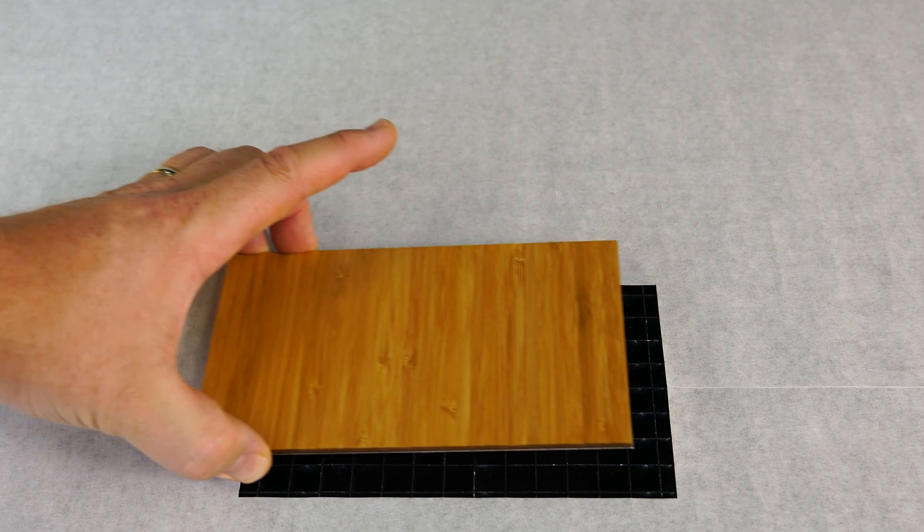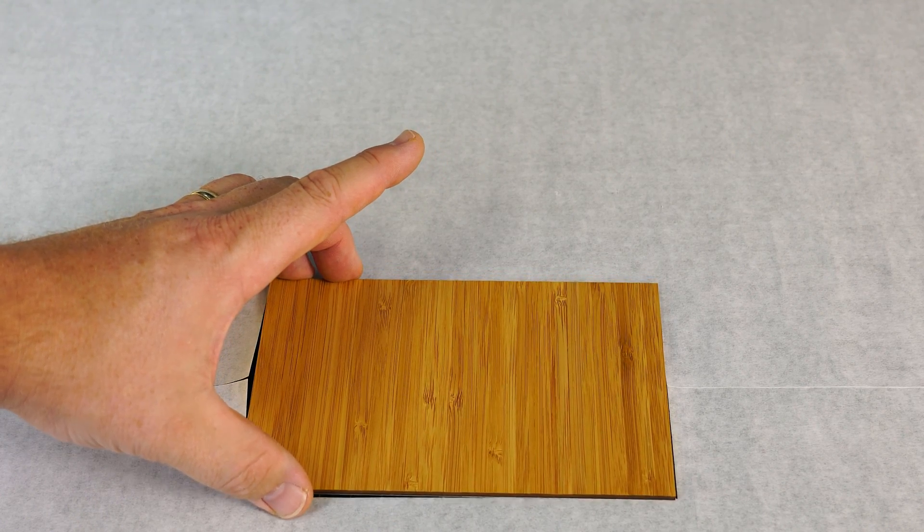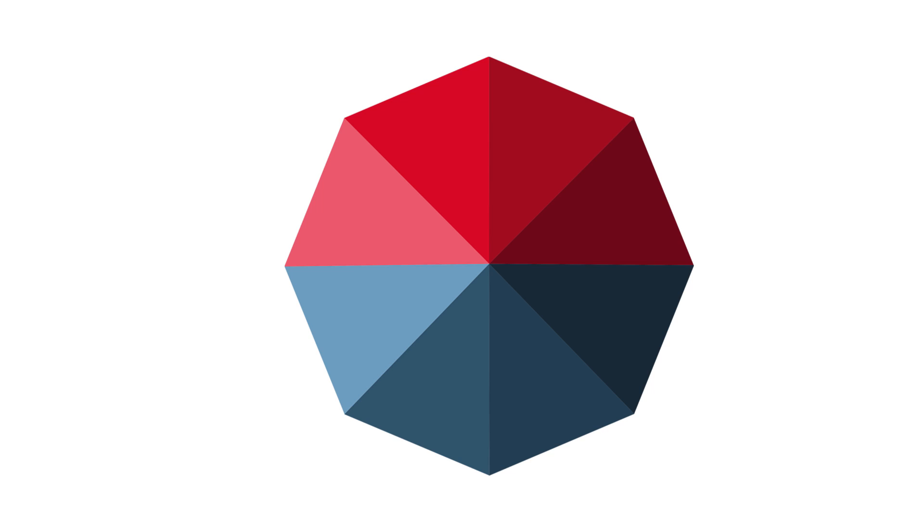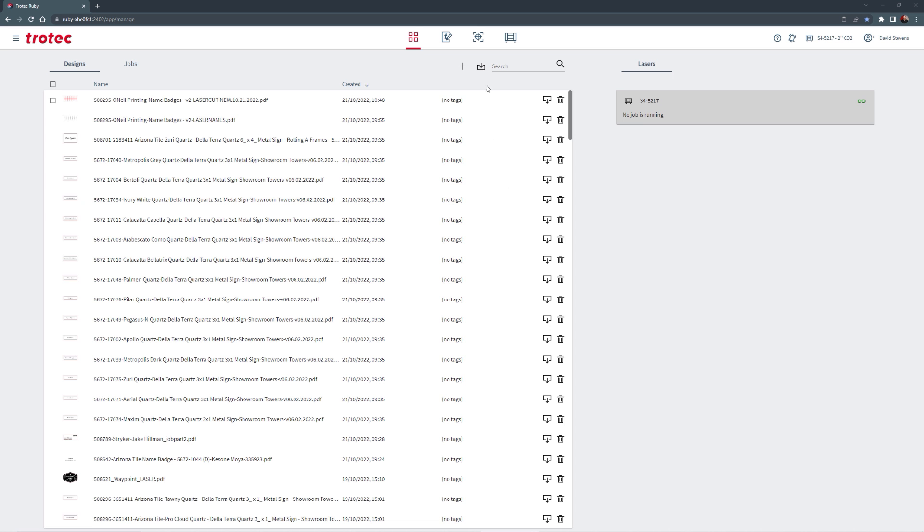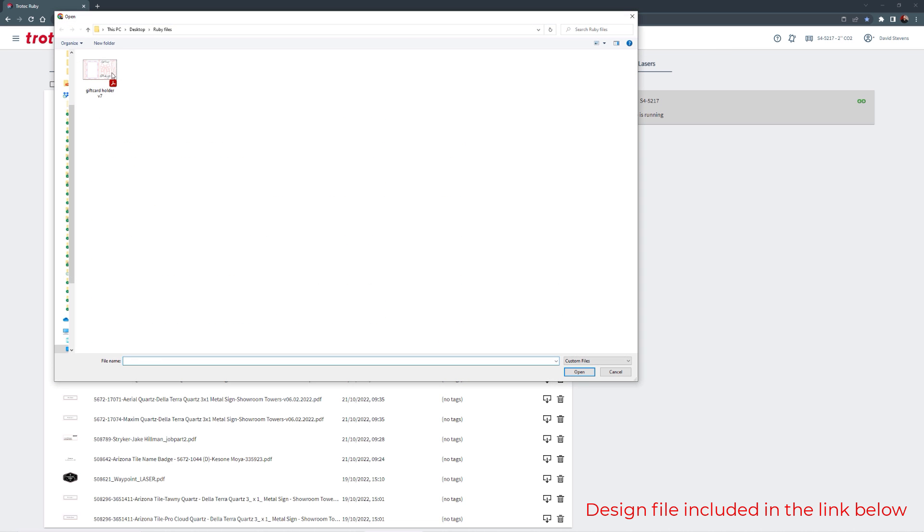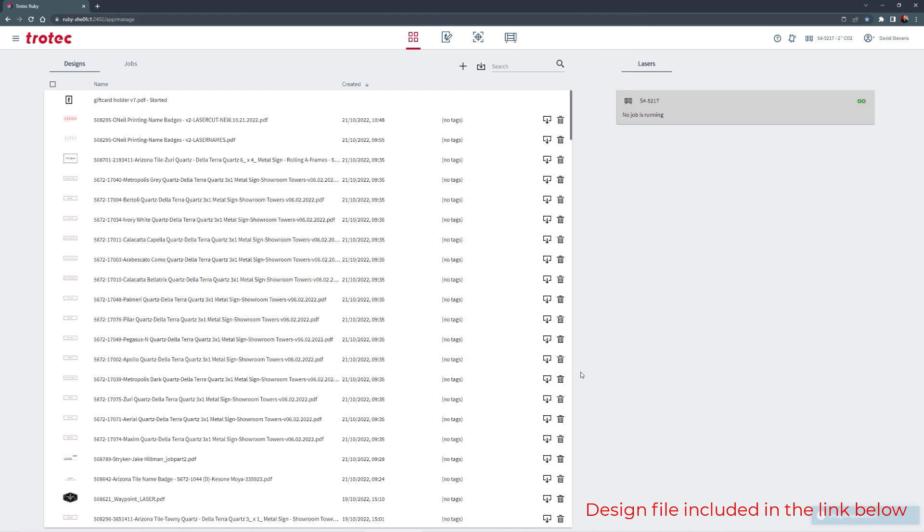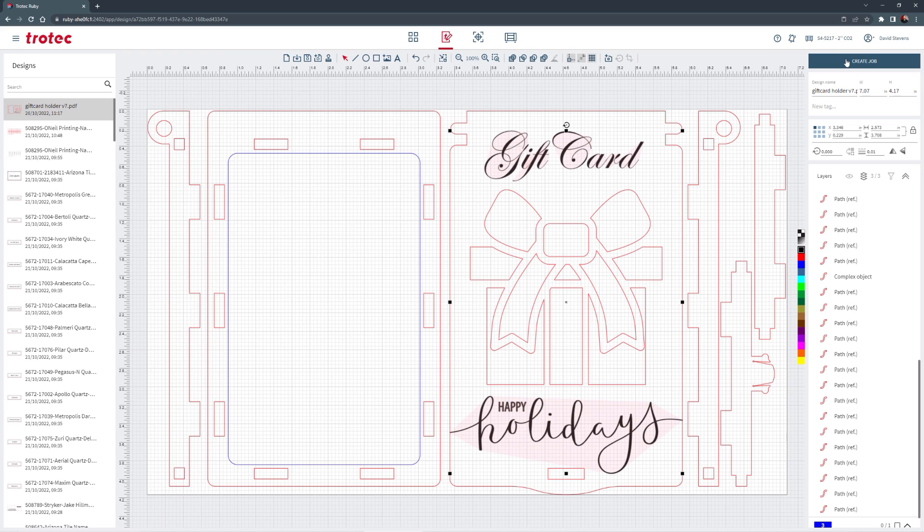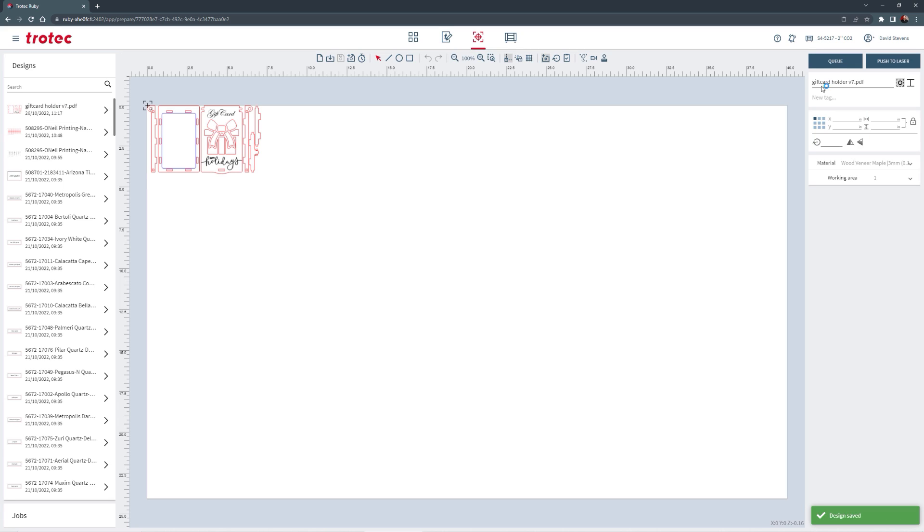Load a sheet of three millimeter material into your Trotec laser system and focus on that material. Open the Ruby software, select import, select the gift box design file then choose open. Select the file from the manage screen and open into the design screen. Since no edits are needed in this case, select create job to open the file into the prepare screen.